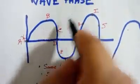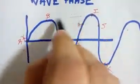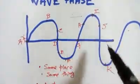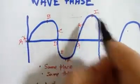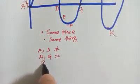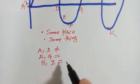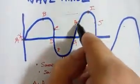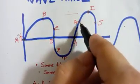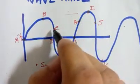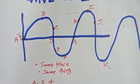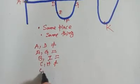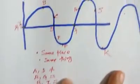What about B and I? Point B is at the crest, so it is in phase only with point I. B is not in phase with D, E, G, J, or K. B and I are always in phase. For point C, we consider H and G as options. H is not in phase because H is going up while C is going down. So C and J are in phase, while C and H are not in phase.